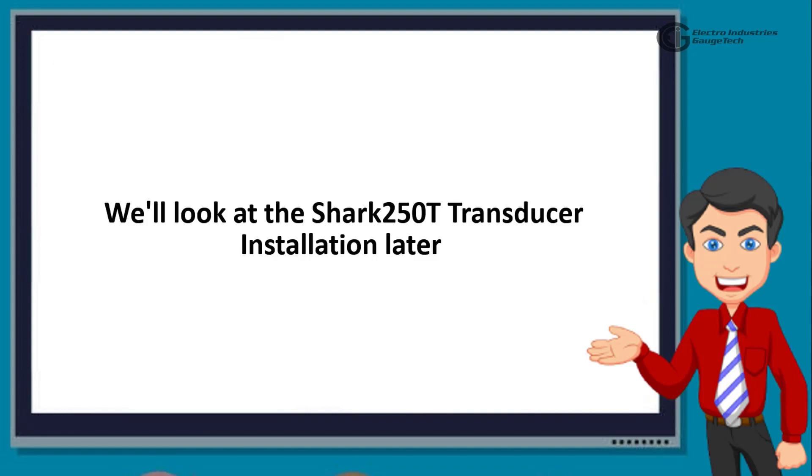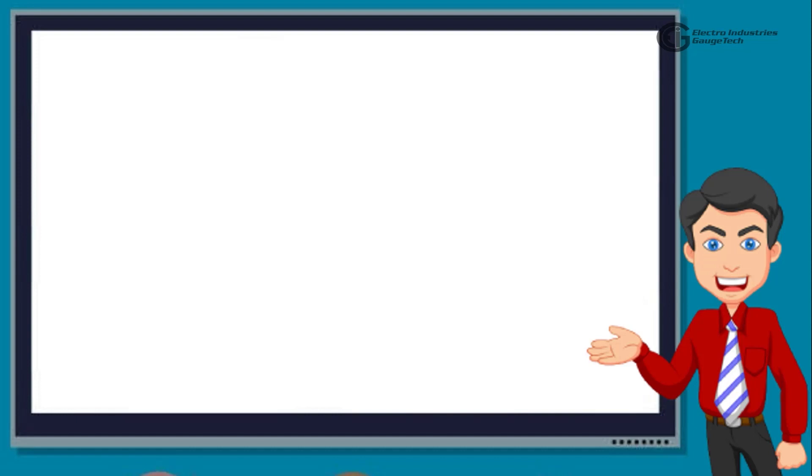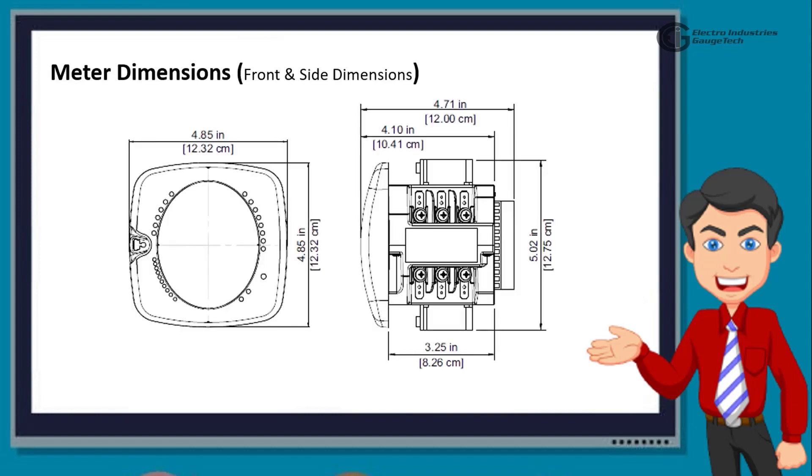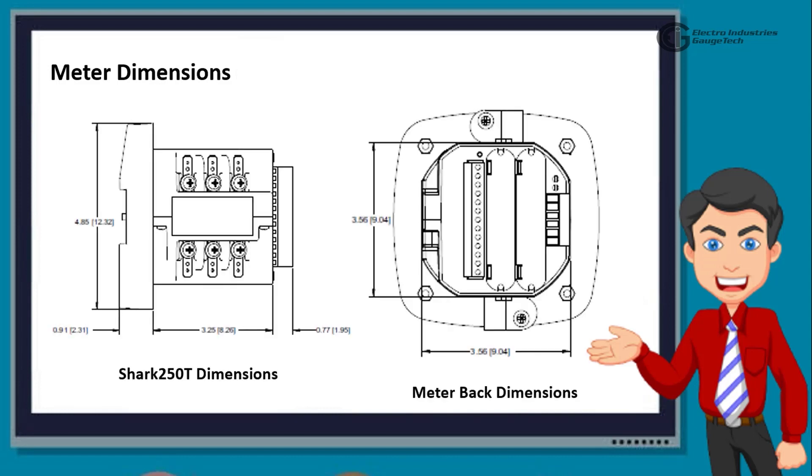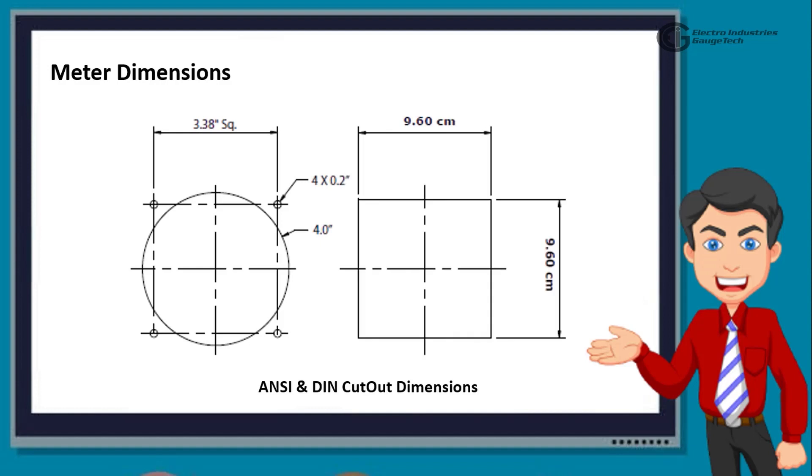We'll look at the Shark 250T transducer installation later in this video. In the sketch shown here, you'll see the meter front and side dimensions in inches and centimeters shown in brackets. The tolerance is plus minus 0.1 inch or 0.25 centimeters. Similarly, the next image shows the Shark 250T dimensions and meter back dimensions. Another image shows the ANSI and DIN cut-out dimensions.